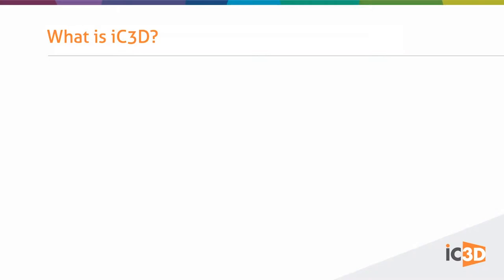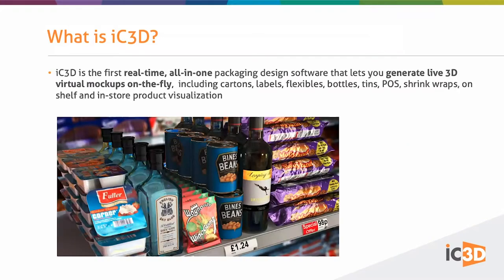Just to explain a little bit again for anyone who has missed the other webinars in the series — IC3D is the first real-time all-in-one packaging design solution that enables you to create 3D packaging mock-ups relatively quickly. That includes cartons, labels, flexibles, bottles, tins, point of sale items, shrink wraps, on-shelf and in-store visualization, and pretty much everything you see on my screen.